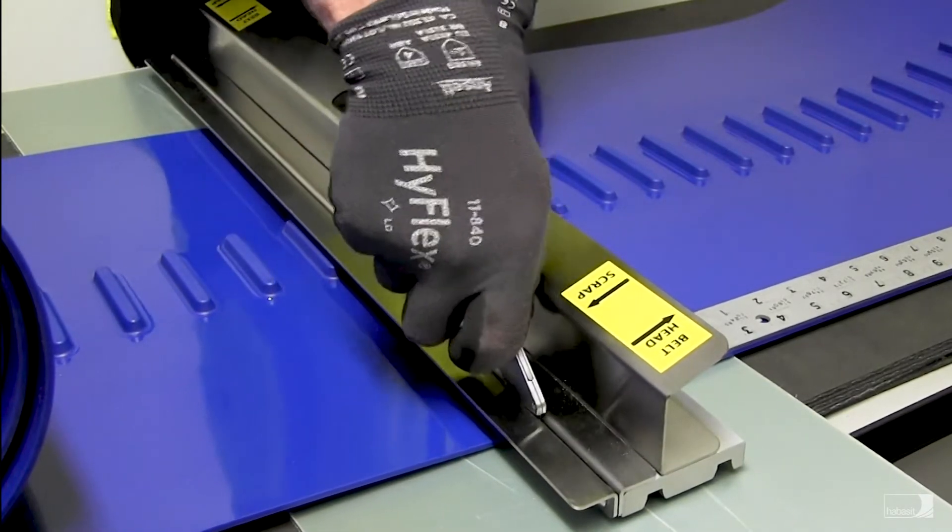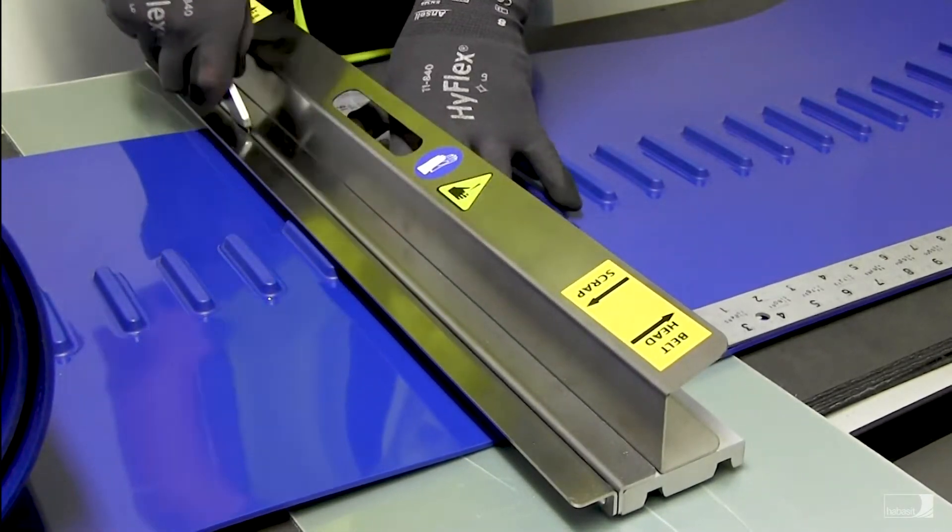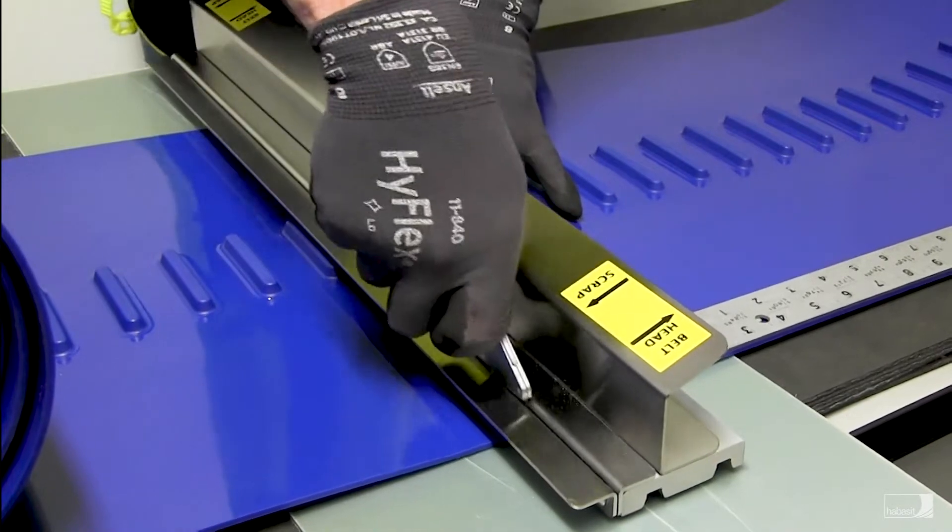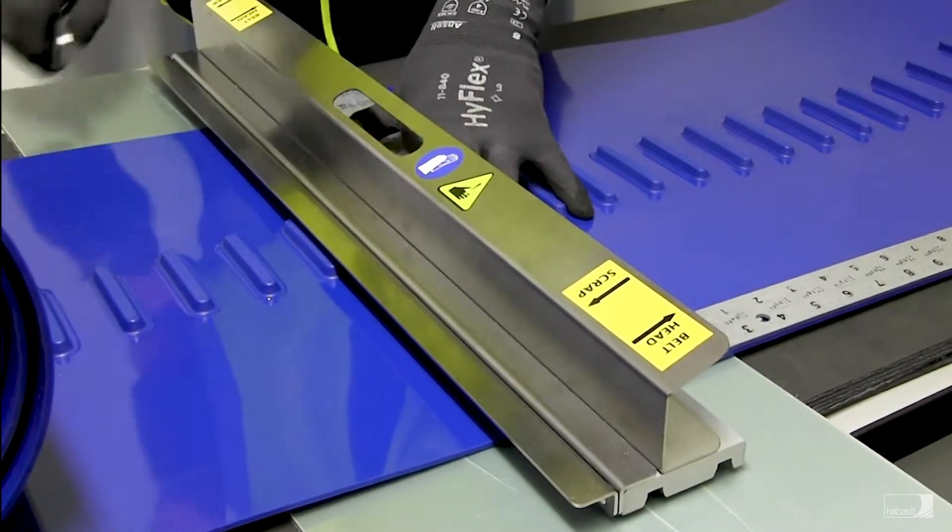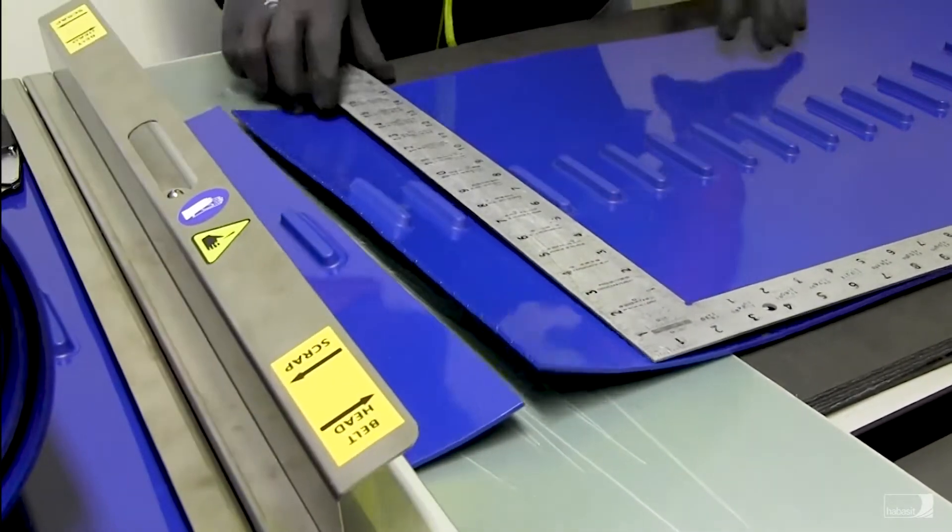Next, slide your sharp blade in the slotted groove to cut a squared end. This will ensure the belt ends are completely straight and the lugs remain accurately pitched and ready for splicing.